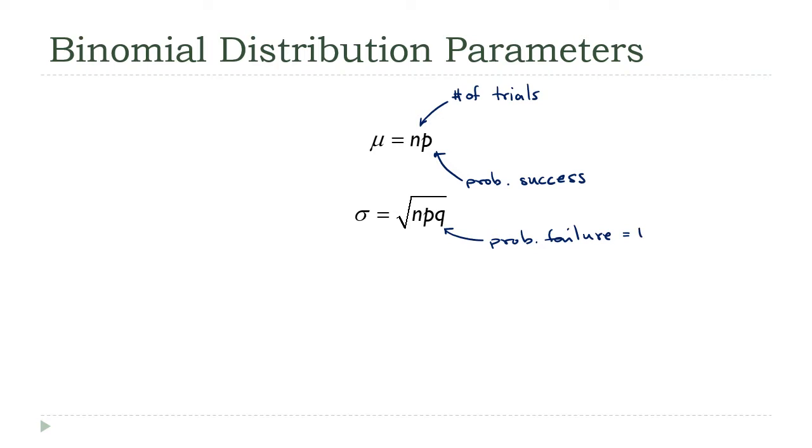The same thing down here in the standard deviation. Of course Q is the probability of failure, which is just 1 minus P. Now to help you out remembering these, think about what NP is.